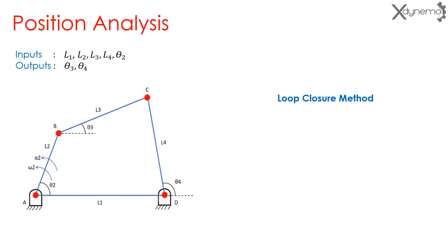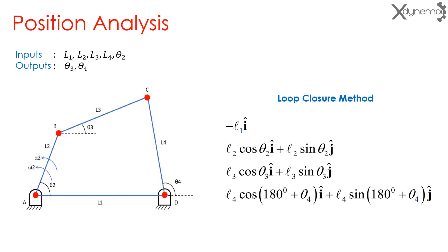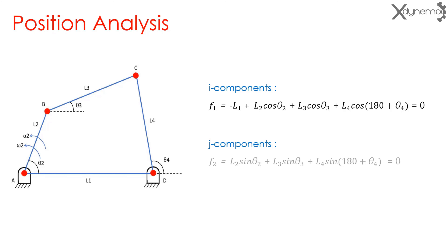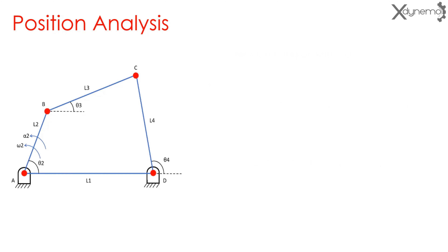We will use the loop closure method for position analysis. Starting from point D, the length of each link is expressed in horizontal and vertical components in terms of i and j. As the loop ABCD is a closed loop, using the loop closure method, we can equate the sum of horizontal components to 0, and the sum of vertical components is also 0. So we have two equations with two unknowns, but these equations are non-linear and cannot be solved directly.